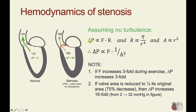The pressure gradient across the valve is proportionate to the flow across the valve times the resistance of the valve opening. Resistance is related to viscosity divided by the radius squared of the valve. Because area is proportionate to radius squared, we can substitute into our pressure gradient formula and say that delta P is proportionate to the flow rate across the valve divided by the valve orifice area squared.